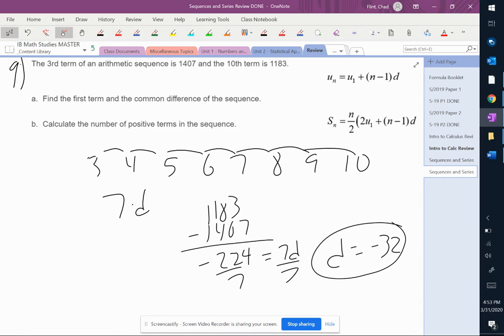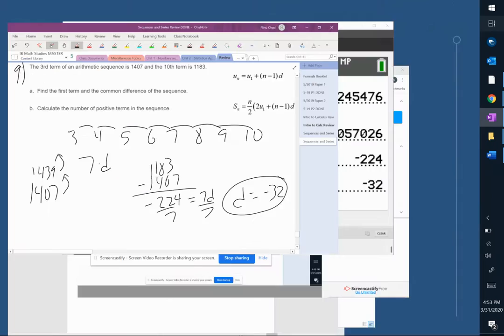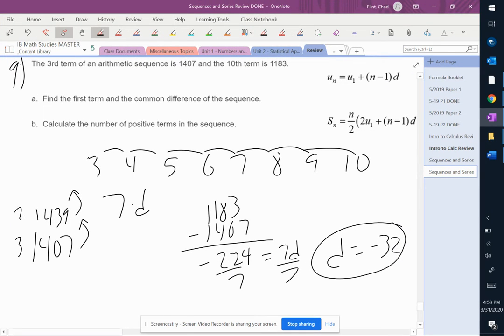So then we have the third term is 1407. And we need to go backwards three times. We need to add 32. So that's going to be 1439. That's 3, that's 2, that's 1. And then we're going to add 32 more. So it's going to be 1471. So U1 is 1471. So there's part A.